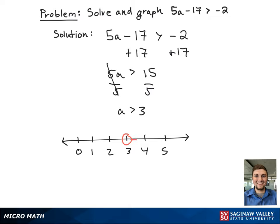On the number line, this looks like an open-ended circle going to the right-hand side towards infinity since all a is greater than 3. In interval notation, this looks like an open interval from 3 to infinity.